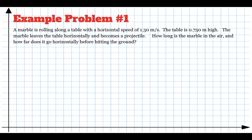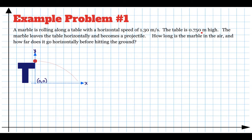We're going to solve two example problems step by step — feel free to pause the video to write down what you need. Here's the first: a marble is rolling along a table at 1.3 meters per second horizontally. The table is 0.75 meters high and the marble falls off and hits the ground. Right when the marble leaves the table, the clock starts ticking. We want to know how long it is in the air and how far it goes horizontally.